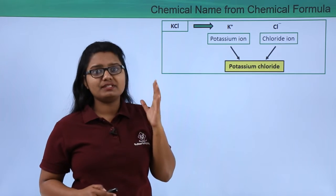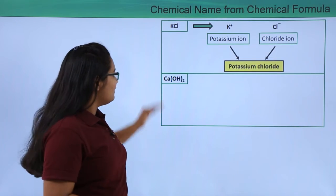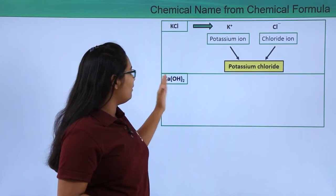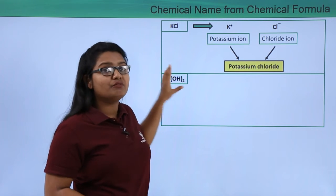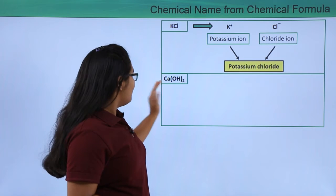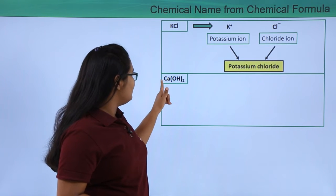Now let's do some more examples. Here I have a formula that is Ca(OH)2. Now here we have to figure out what must be the constituents of this particular formula. Now here I see that it must be having Ca which is a calcium ion.